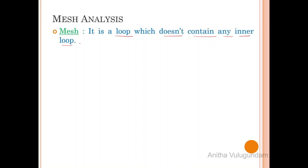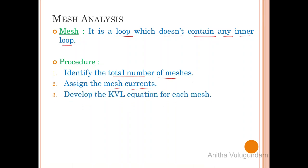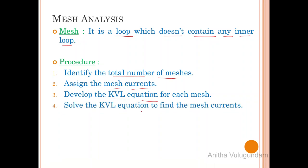The procedure to be followed in mesh analysis: Step 1 — identify the total number of meshes. Step 2 — assign the mesh currents, which can be assigned either clockwise or anti-clockwise. Step 3 — develop the KVL equation for each and every mesh. Step 4 — solve the equations to find the mesh currents.